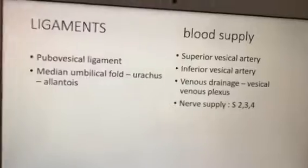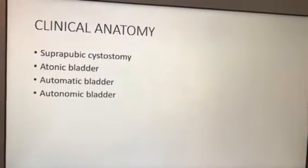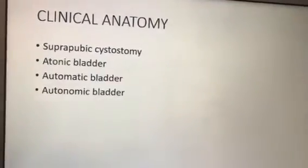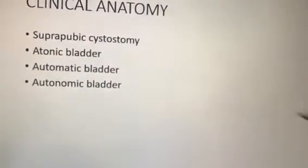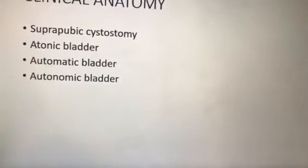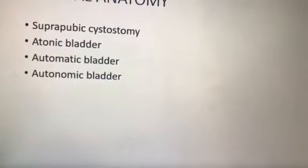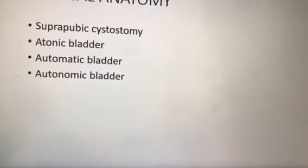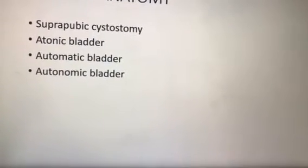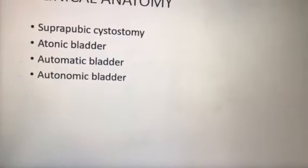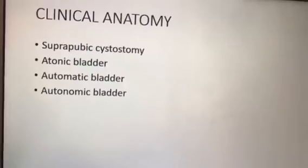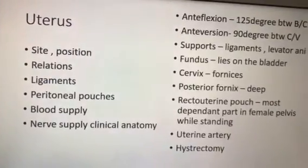Next, clinical anatomy. Suprapubic cystostomy — we have already explained about that. At least you should mention all these clinical points. Suprapubic cystostomy means making an opening in the bladder above the pubic symphysis, because the inferolateral surface is not covered by peritoneum, and if the bladder is enlarged it comes above the pubic symphysis, so you can put the needle there. The next ones are atonic bladder, automatic bladder, and autonomic bladder.